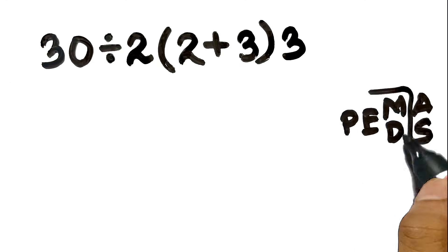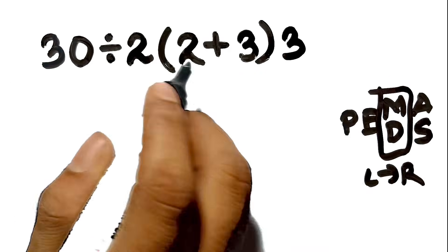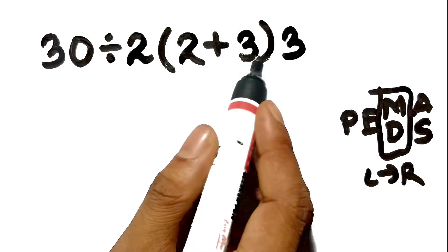Remember that multiplication and division have equal priority, and we have to work from left to right. In this expression, once we solve the bracket, we actually have three operations lined up.